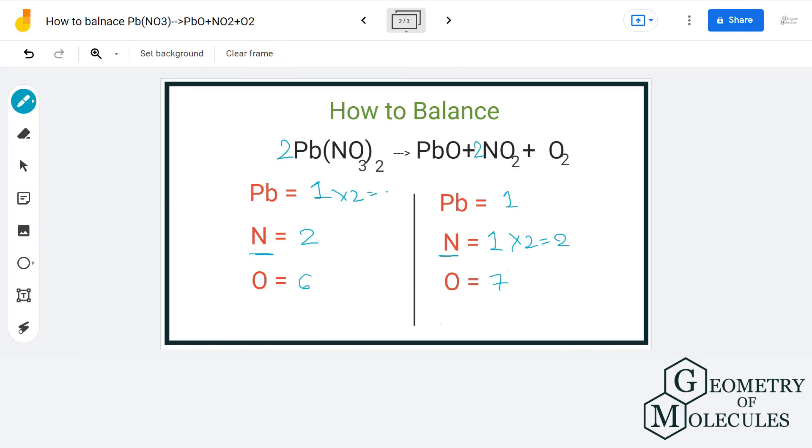This will give us two lead, four nitrogen, and 12 oxygen atoms on the reactant side. On the product side, we only have one lead atom.